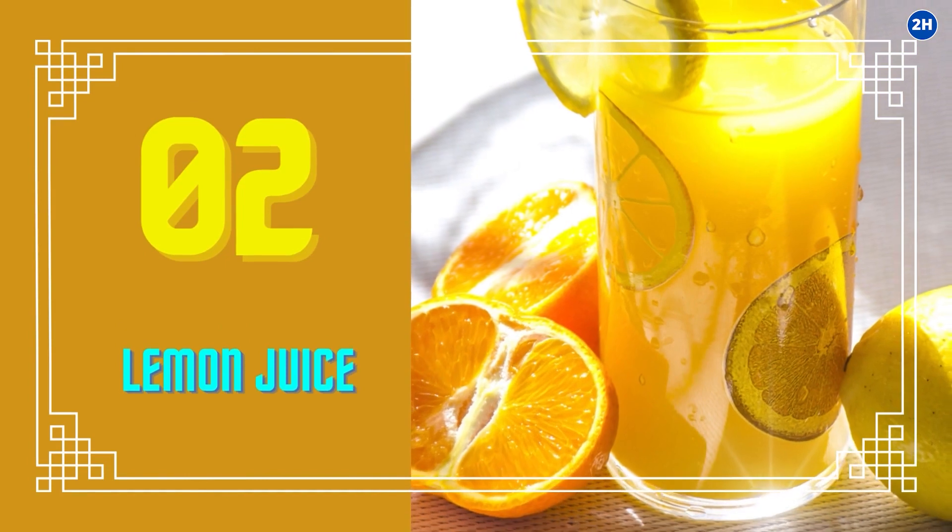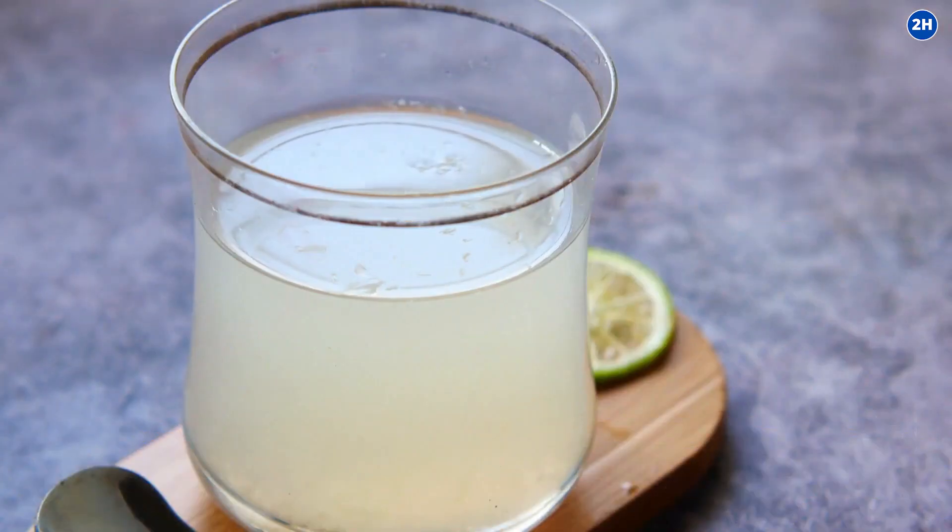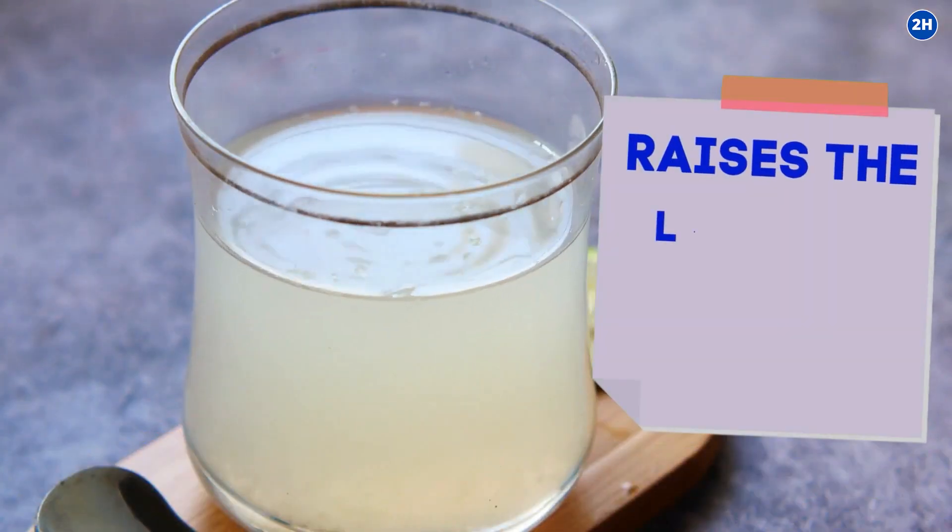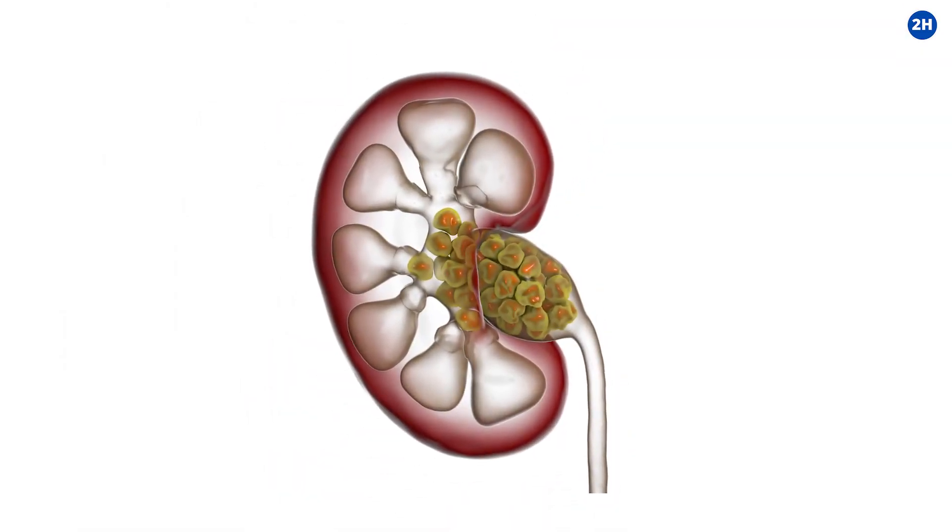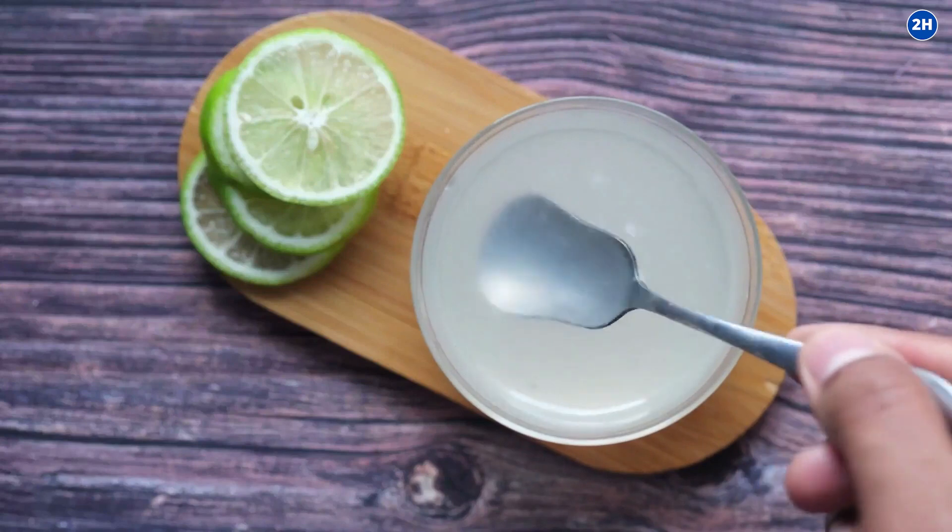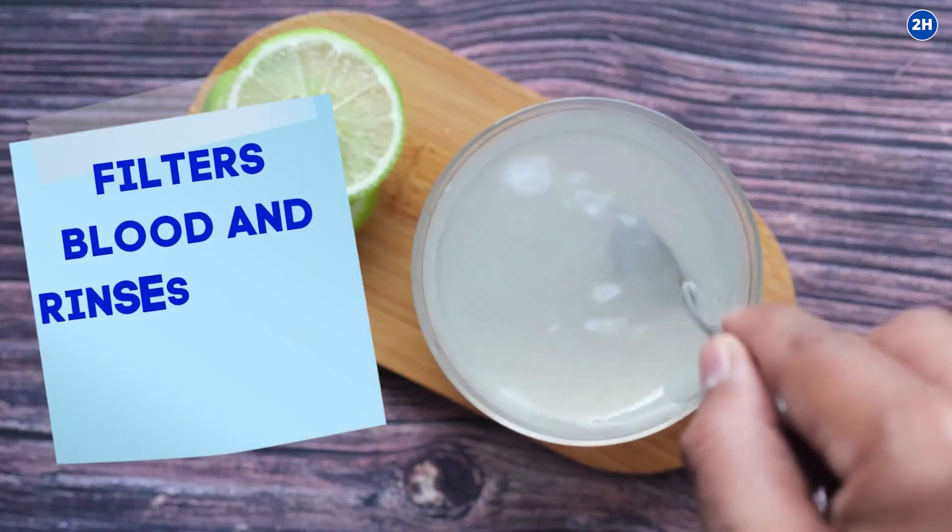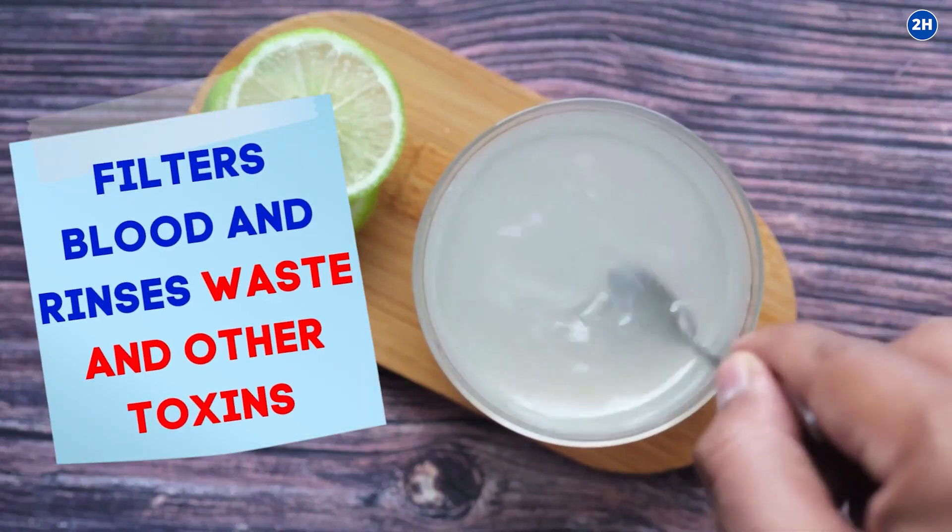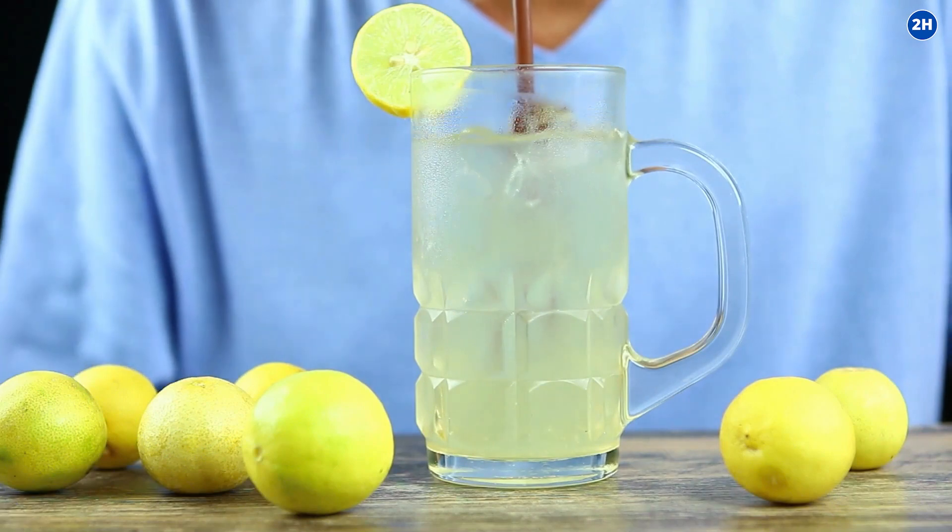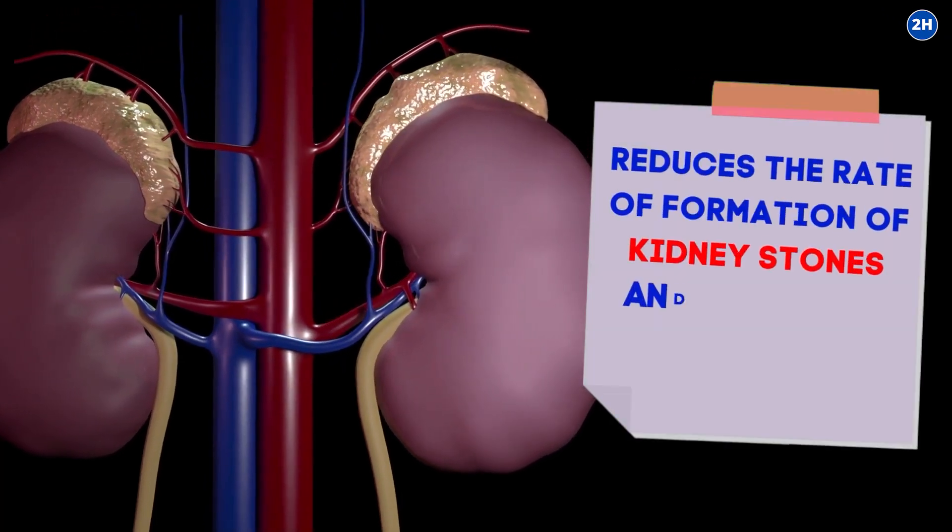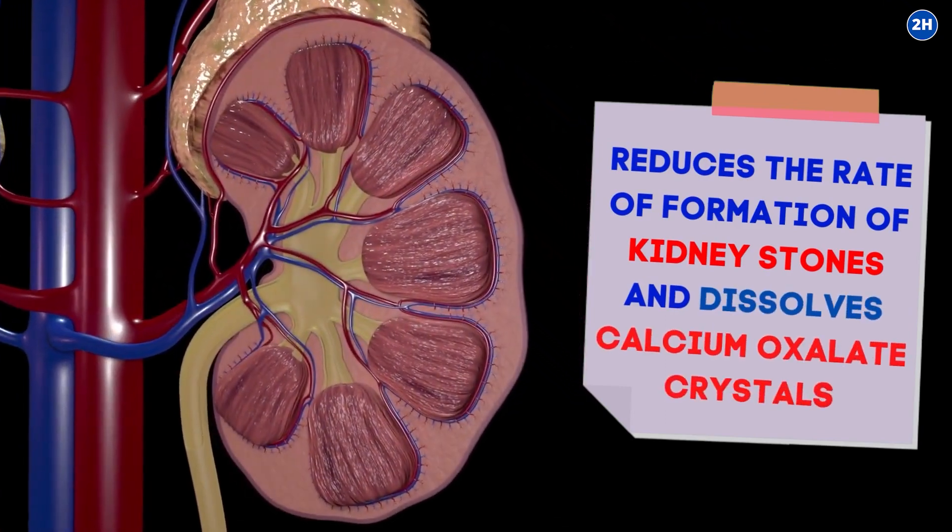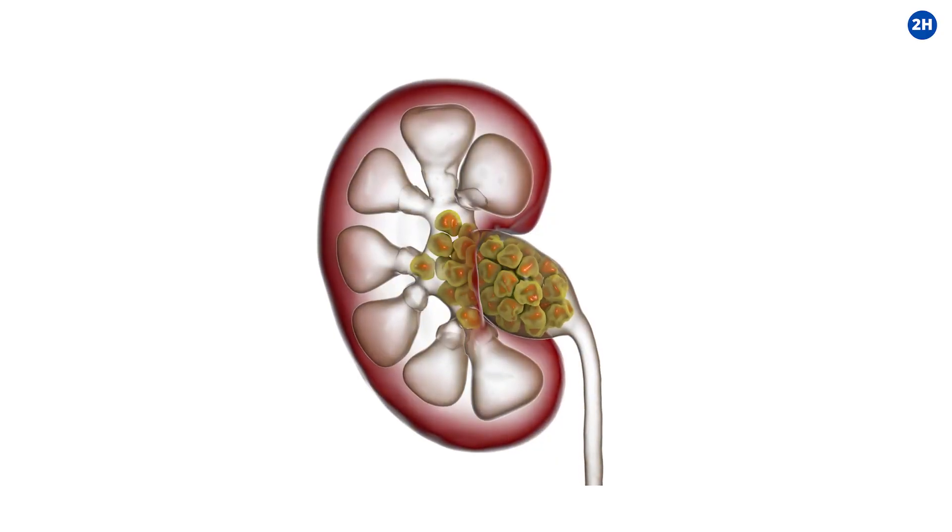2. Lemon Juice. Lemon juice is naturally acidic and raises the levels of citrate in the urine, thus discouraging the formation of kidney stones. Lemon juice also filters blood and rinses waste and other toxins. Daily consumption of diluted lemon juice reduces the rate of formation of kidney stones and dissolves calcium oxalate crystals, the most common component of kidney stones.